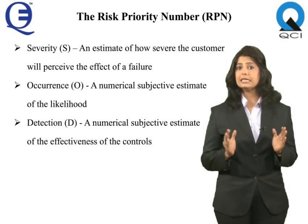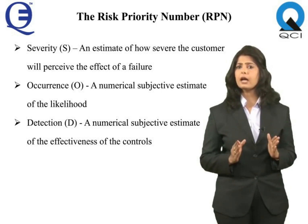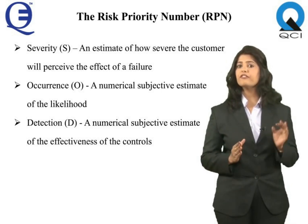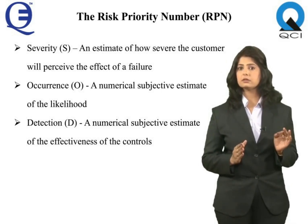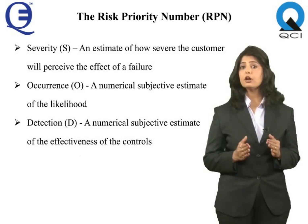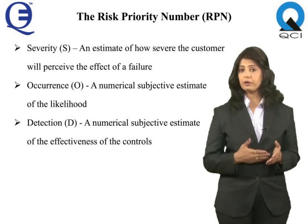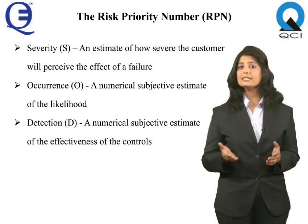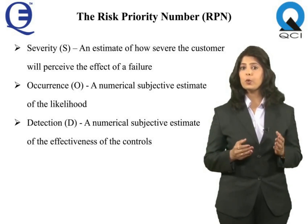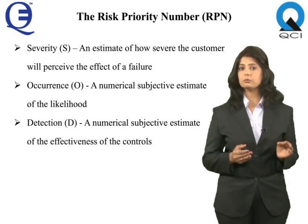Detection (D), sometimes termed effectiveness, is a numerical subjective estimate of the effectiveness of the controls to prevent or detect the cause or failure mode before the failure reaches the customer.